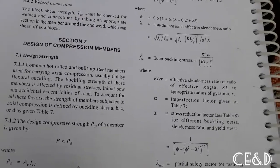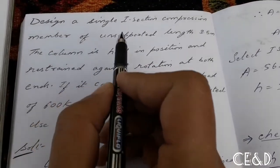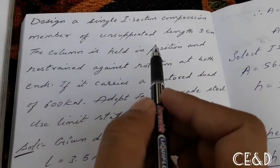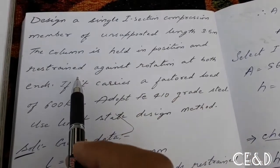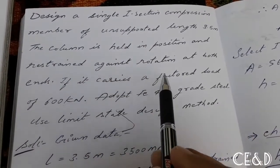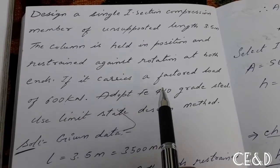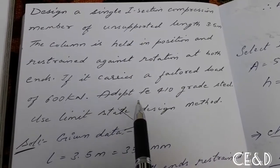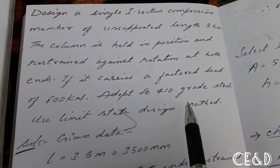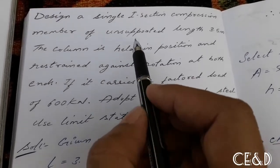Design problem: Select and design a single I-section compression member of unsupported length 3.5 meters. The column is held in position and restrained against rotation at both ends. It carries a factored load of 600 kN. Adopt Fe410 grade steel and use the limit state design method.